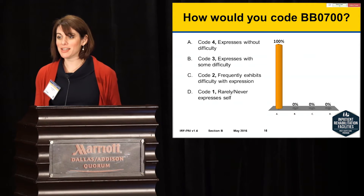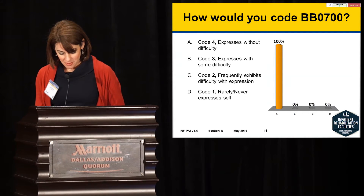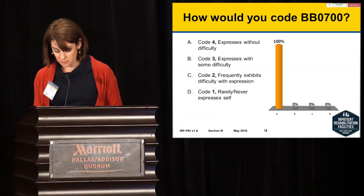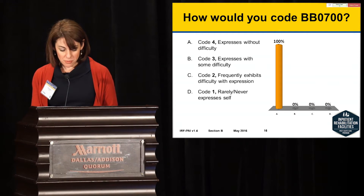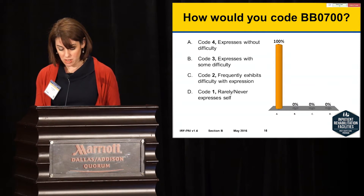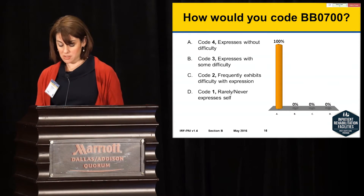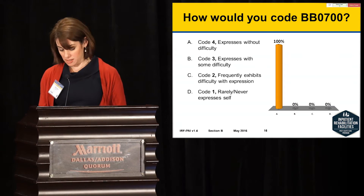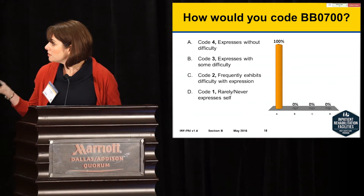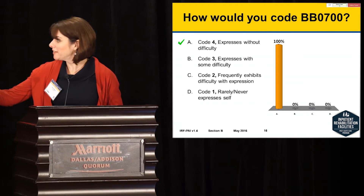Everybody got 100%. For BB0700, the code would be a 4. Mr. D was able to engage in conversation about his medication, which is considered a complex topic. Mr. D asks appropriate questions and his speech is clear.